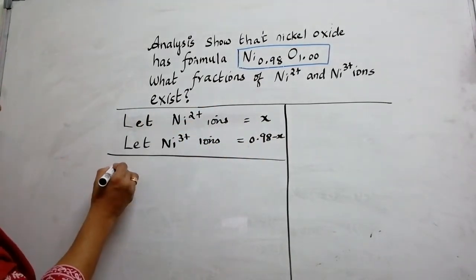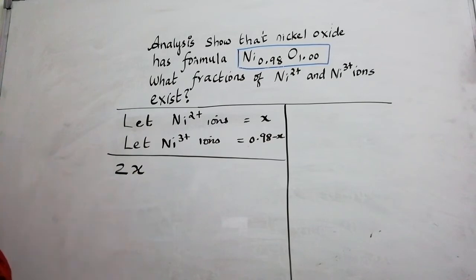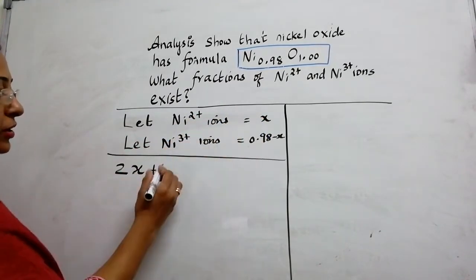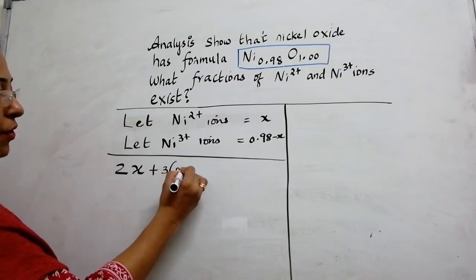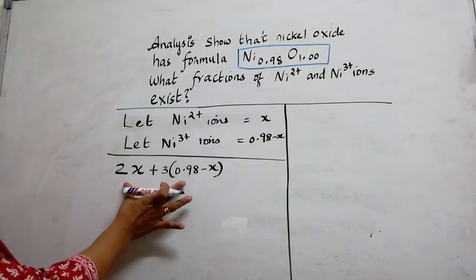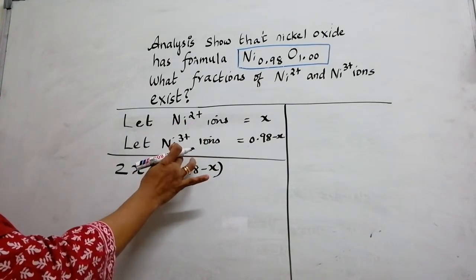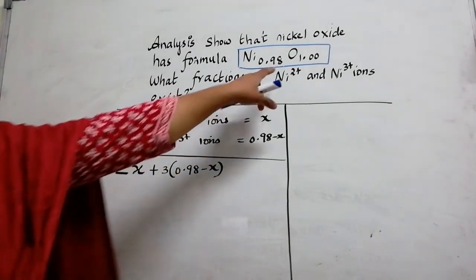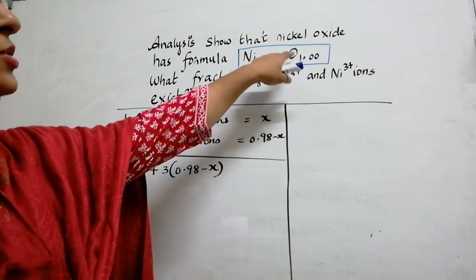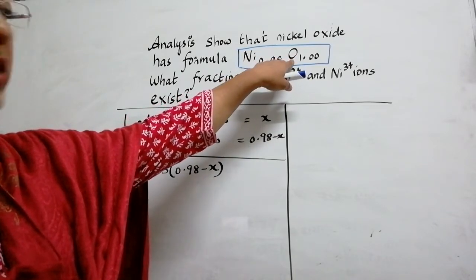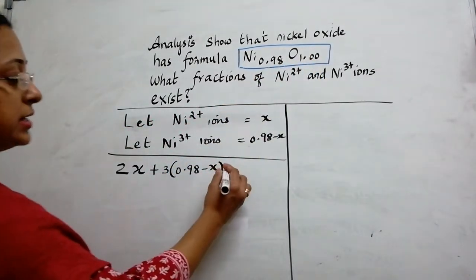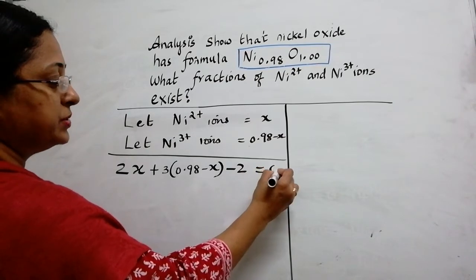So I will be getting the first step 2X because 2 into X. Then I have 3 into this particular fraction, so 0.98 minus X. So we finish up nickel 2+ and nickel 3+. Now the left is only oxygen. What is the valency of oxygen? We all know it is minus 2. So charge of oxygen is minus 2 into 1. Therefore you will get minus 2 which is equal to 0.